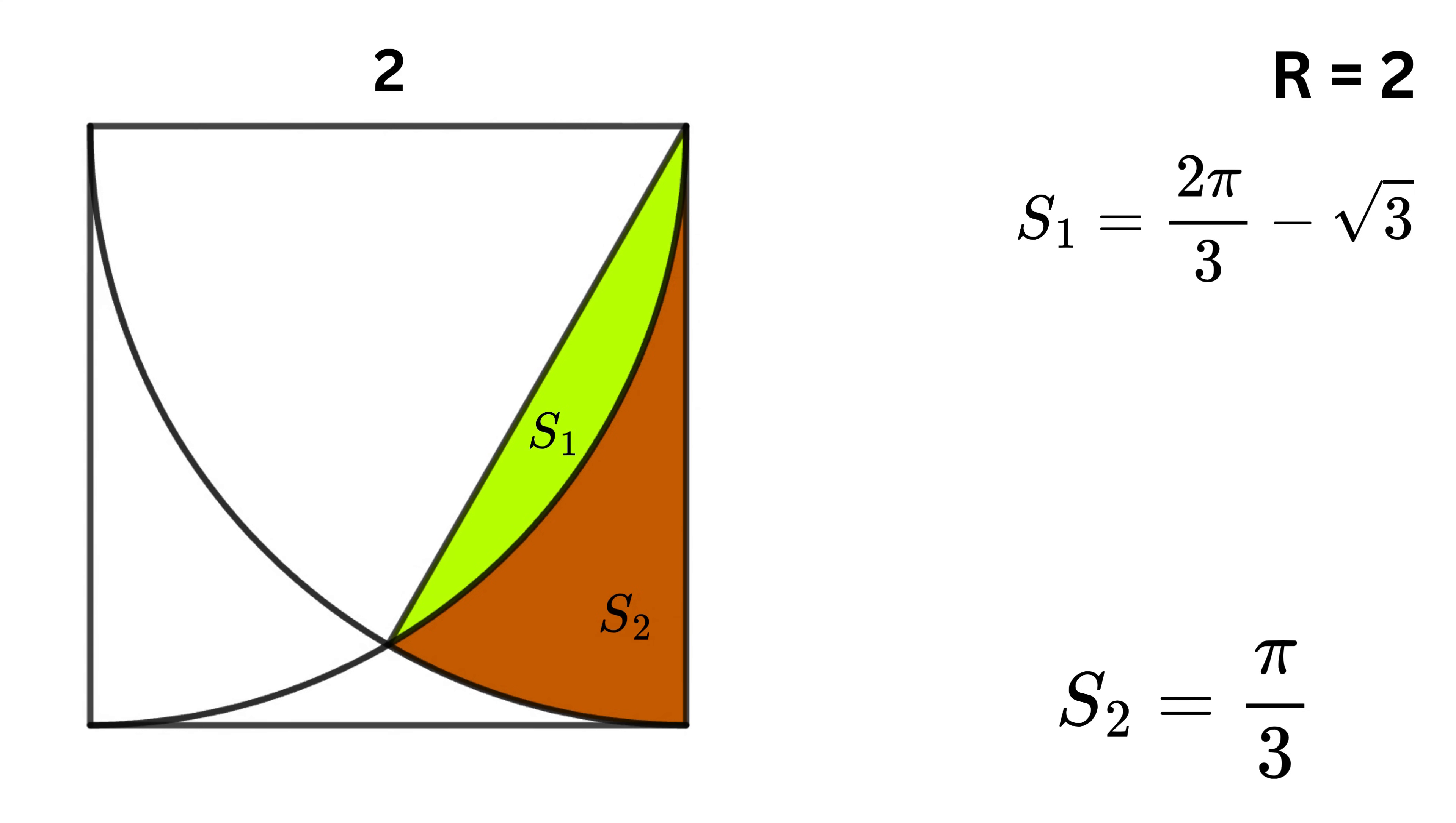We are almost done. Notice that this 30-degree sector s2 covers the entire shaded region which we are interested in, plus the small region which we called s1. Therefore, the area of the shaded region is the area of the 30-degree sector s2 minus the area of s1. So we get π/3 minus (2π/3 - √3). This becomes π/3 - 2π/3 + √3, combining the π terms we get the area of this shaded region as √3 - π/3.